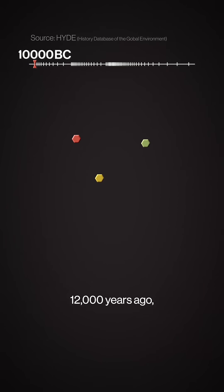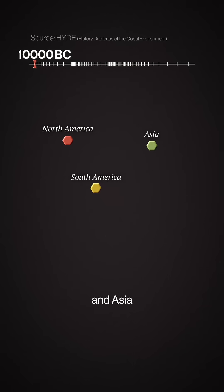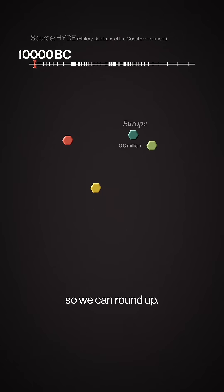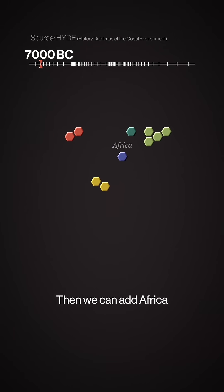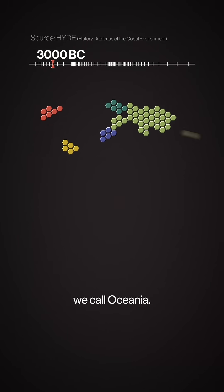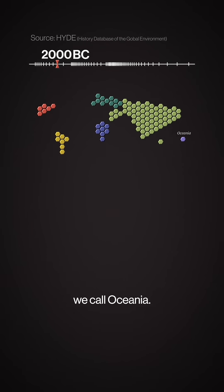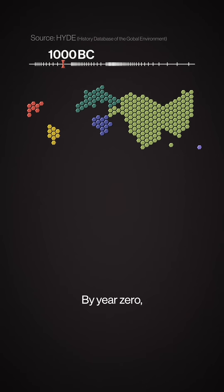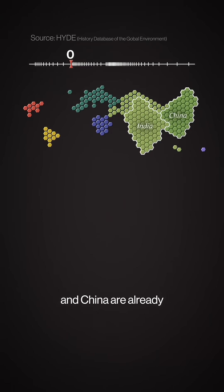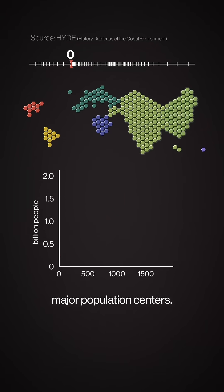12,000 years ago, North America, South America, and Asia had over a million people. Just a few centuries later, Europe passed 500,000 so we can round up. Then we can add Africa, and eventually the collection of island nations we call Oceania. By year zero, about two-thirds of the population lives in Asia, and the places we now call India and China are already major population centers.